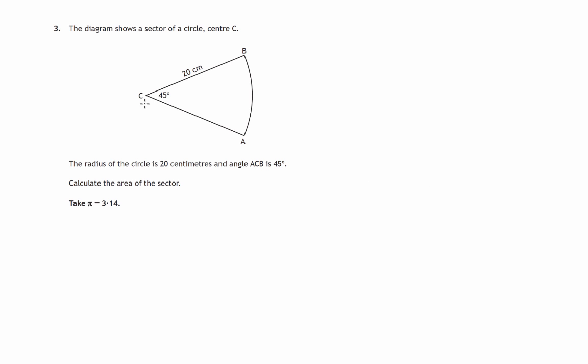This question is about a sector of a circle. We're told the radius, we're told the angle at the centre, and we're asked to calculate the area of this sector. Now remember we're in paper one where we're not allowed to use calculators, so we must use the value they've given us for pi, which is 3.14.